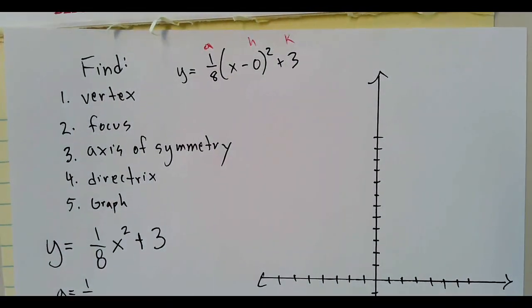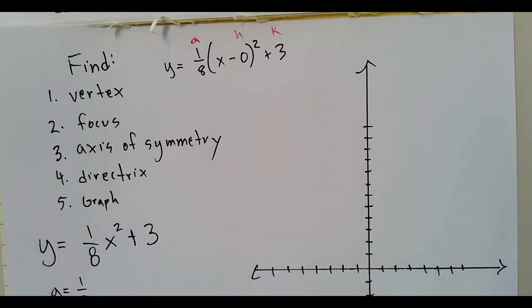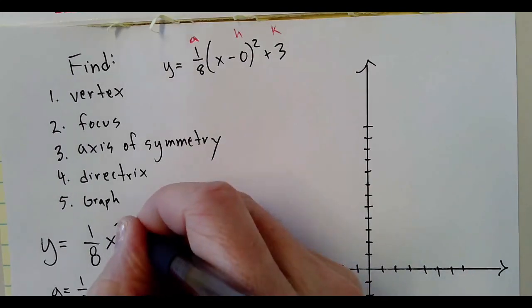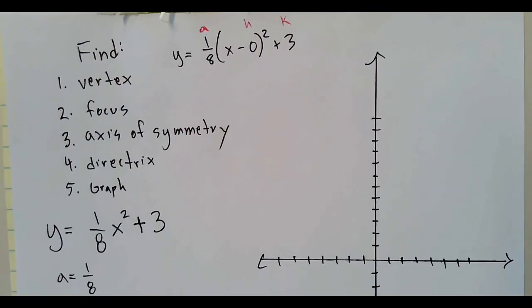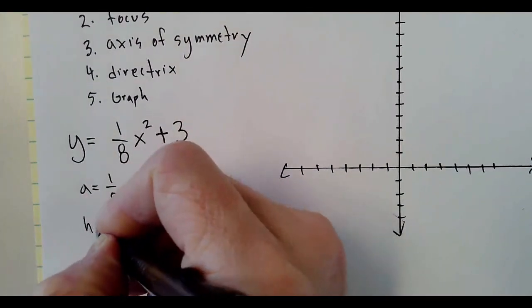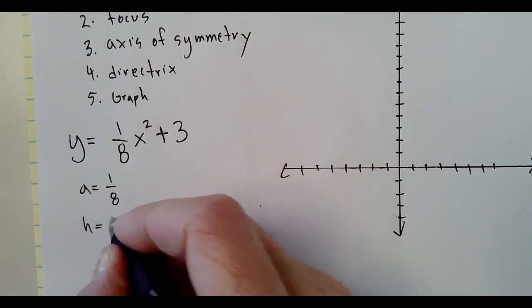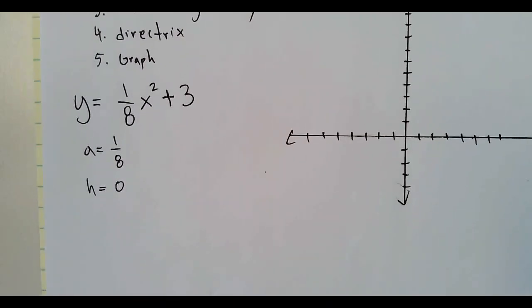You can see that I just rewrote it in that format. But this right here is not h, so don't think that h is negative three or something like that. Since it's a plus, a is one-eighth, h is zero, and k is plus three.